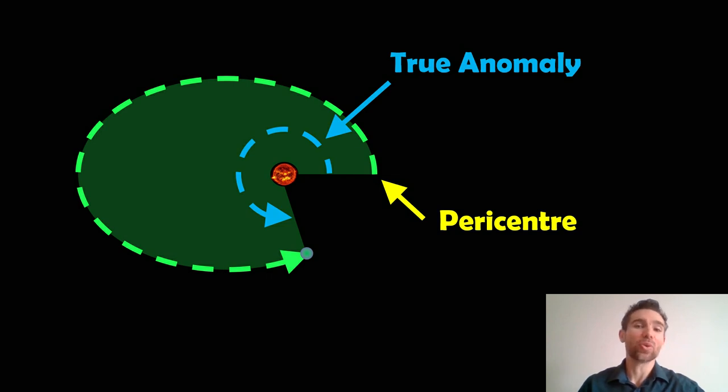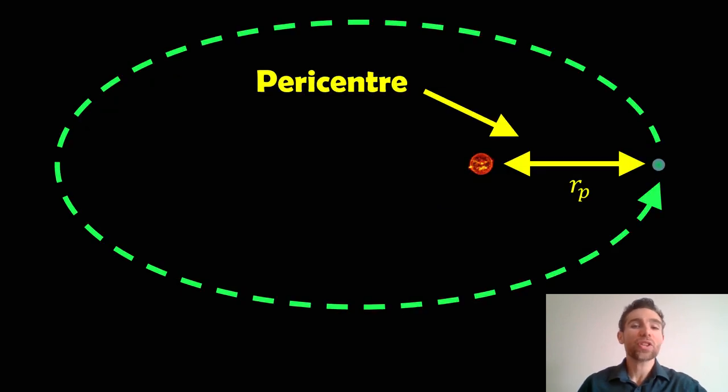So what is the true anomaly? Well, we first need to revisit elliptical orbits. There's one key aspect we need to take into consideration for the true anomaly, and that is the pericentre. It can also be known as the periapsis, the perihelion, and it depends on the context of the orbit you're considering, really.